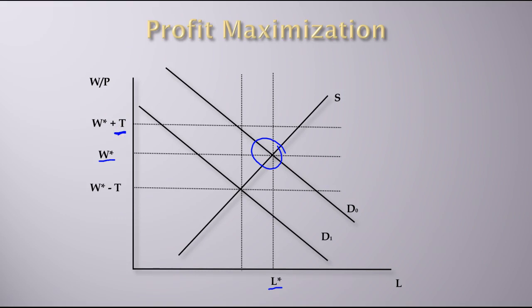What that means is if they wanted to keep the wage at W*, then what they would actually have to pay would be W* plus the tax, so it's this line here.